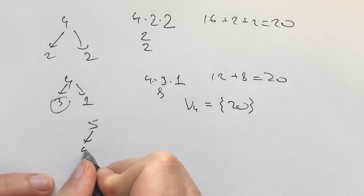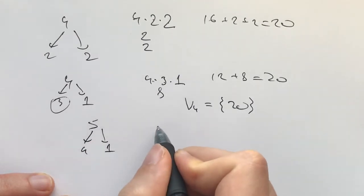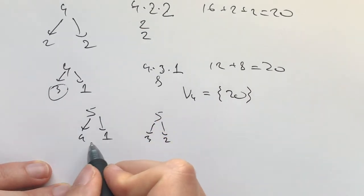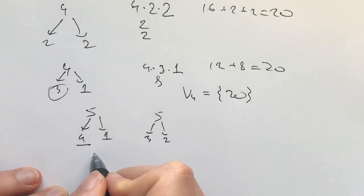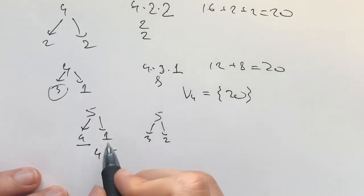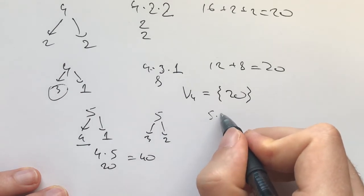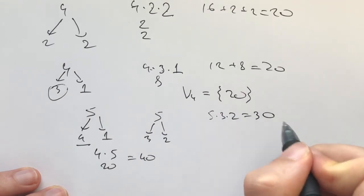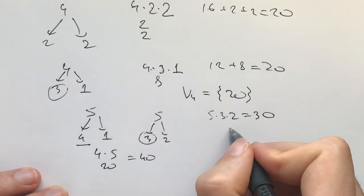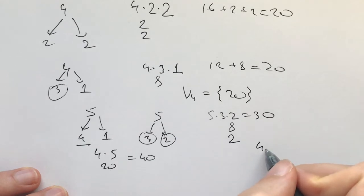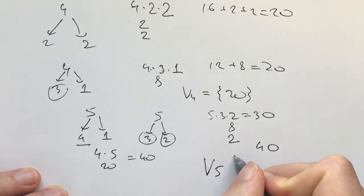So maybe let's look at 5. What options do we have? We have 4, 1, or we have 3, 2. In this case, we break them up into 4 and 1. Here we write 4 times 5, and then we get V4, which is 20, so the total is 40. And in this case, we get 5 times 3 times 2, which is 30, and then here we're left with V3, which is going to be 8, and here V2 is going to be 2, so we're left with 40 again. So, I mean, again, it's just one value, and it's 40.